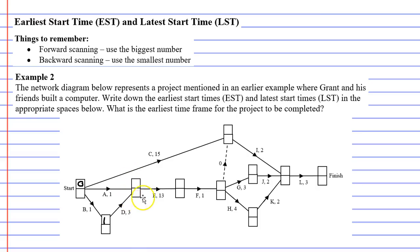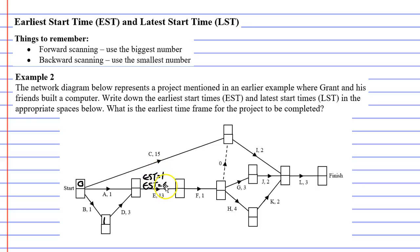Then we get to our next vertex. There are two different paths we can take to get here: we can take the path along activity A, or the path along activities B then D. If we go along activity A, it's only one minute — zero plus one is one. Or if we go along activities B then D, we get one plus three, which comes out to four minutes. We always pick the bigger number, so we're going to write down four.